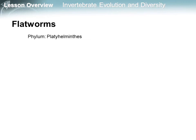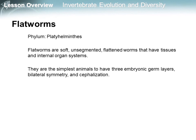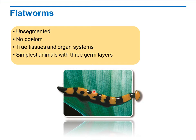Now let's see the flatworms. They belong to phylum Platyhelminthes. Flatworms are soft and unsegmented, flattened worms that have tissues and internal organ systems. They are the simplest animals to have three embryonic germ layers, bilateral symmetry, and cephalization. Flatworms do not have coeloms. They have true tissue and organ systems.